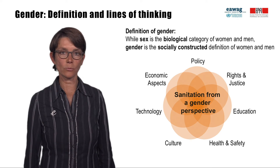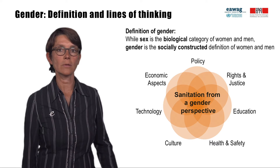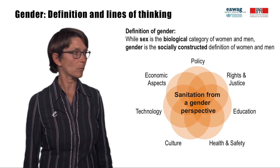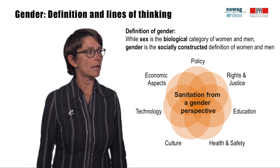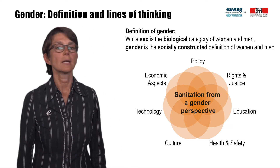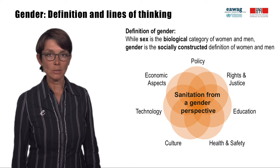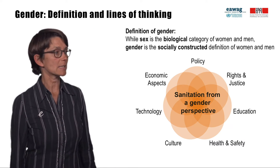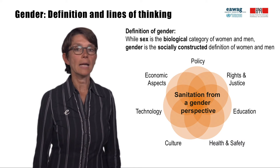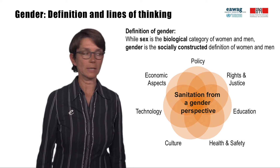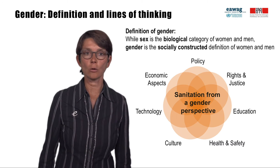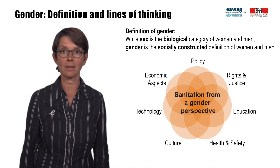In this gender flower, you can see the seven key aspects: policy, rights and justice, education, health and safety aspects, culture, technology and economic aspects. We will have a closer look at some of them.